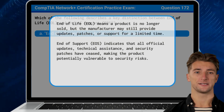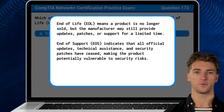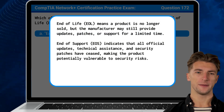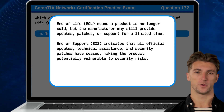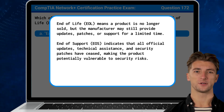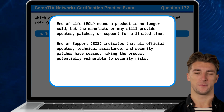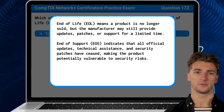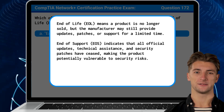End-of-life ends sales but may still have support. End-of-life means a product is no longer sold but the manufacturer may still provide updates, patches, or support for a limited time. End-of-support indicates that all official updates, technical assistance, and security patches have ceased, making the product potentially vulnerable to security risks.